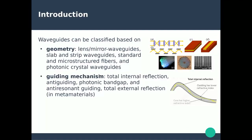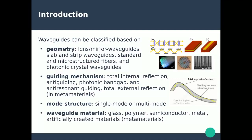The second characteristic is the guiding mechanism: total internal reflection, where light bounces at the interface between two media; photonic band gap for photonic crystals; or total external reflection for metamaterials. The third characteristic is the mode structure — single mode or multi-mode, which we'll discuss shortly. The fourth is the type of material used.